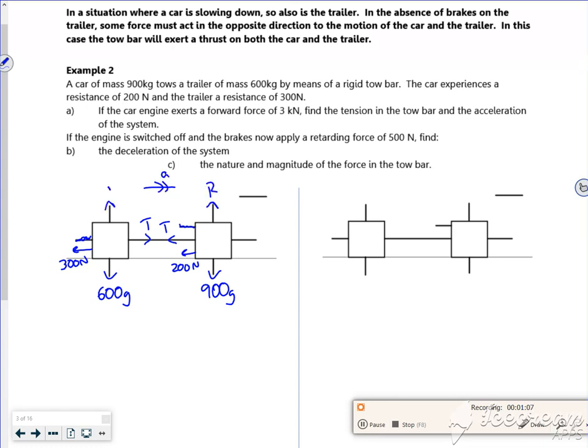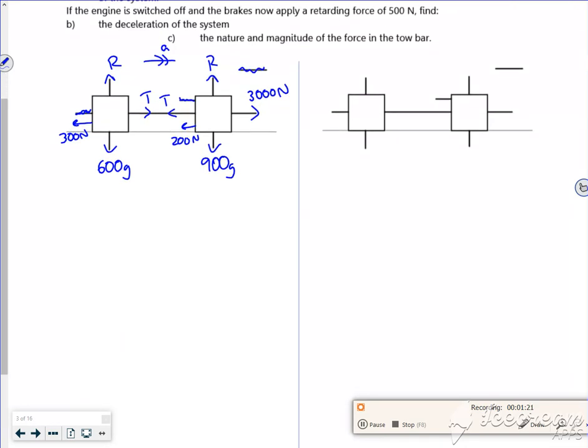It says if the car exerts a forward force of three kilonewtons, 3000 newtons, that's where my acceleration. Find the tension and the acceleration. Right, so treat it as one particle and that'll find the acceleration.